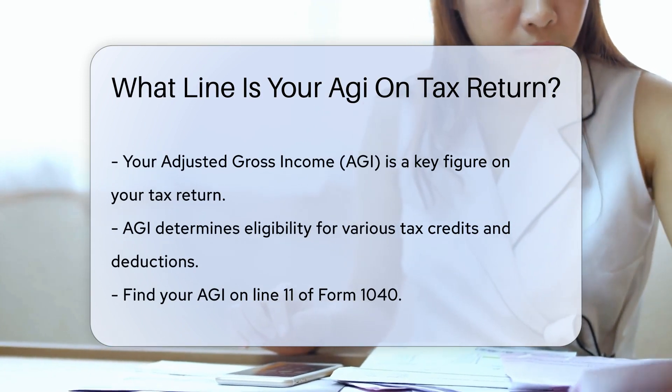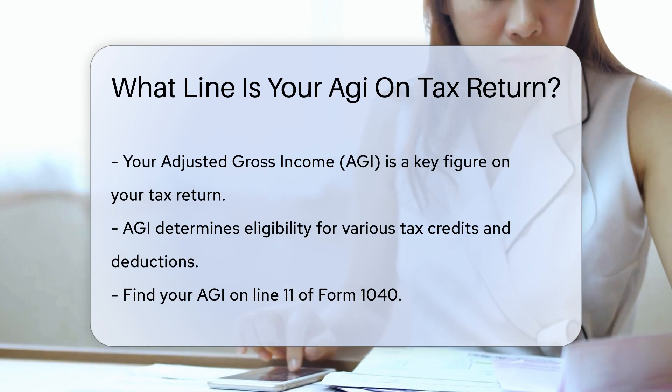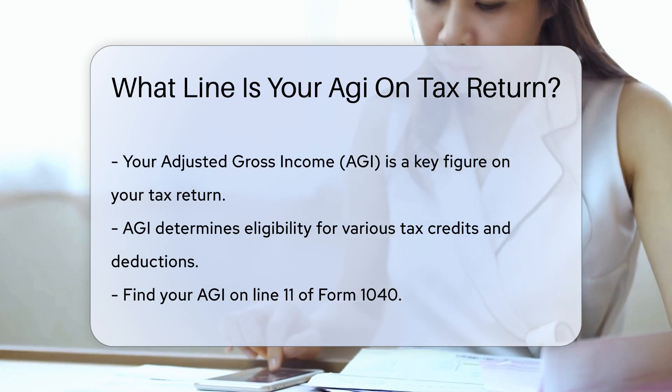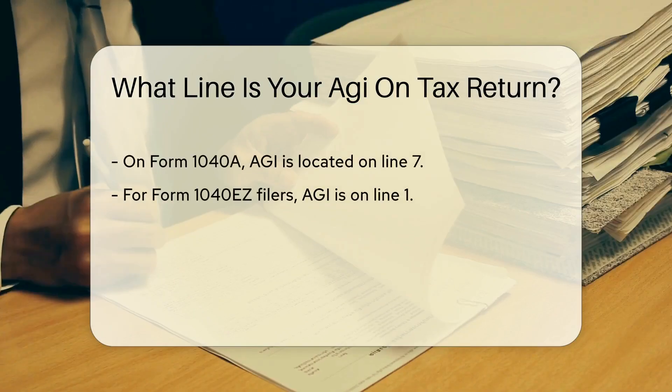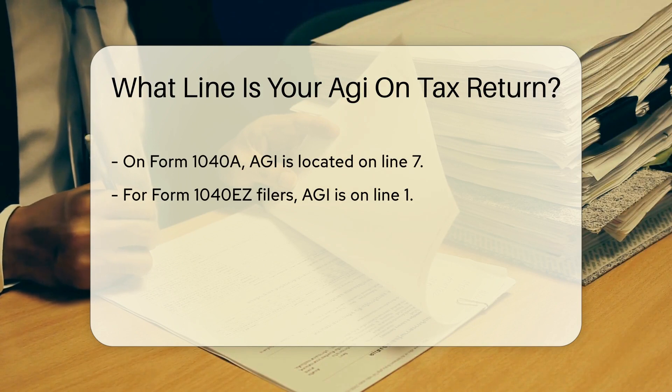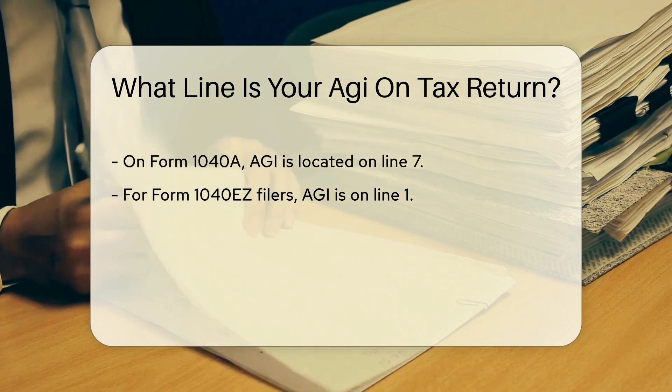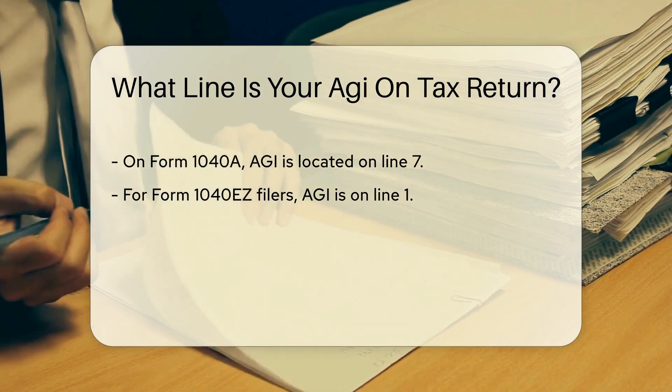To locate your AGI, check line 11 on Form 1040, line 7 on Form 1040A, or line 1 on Form 1040EZ.